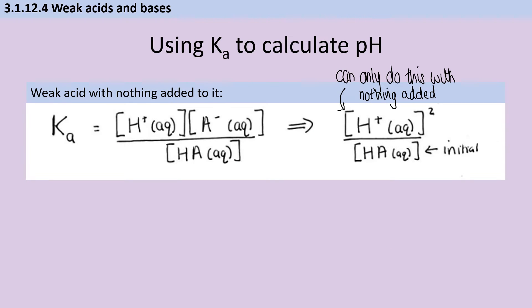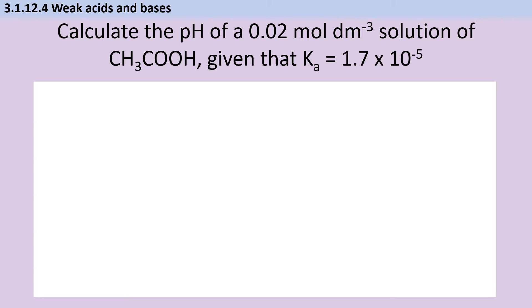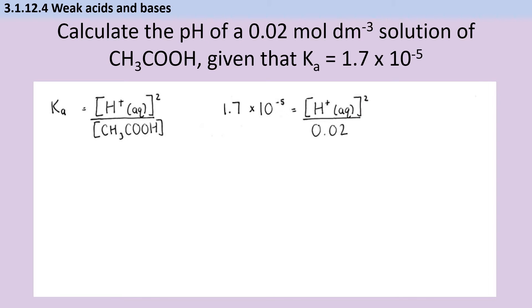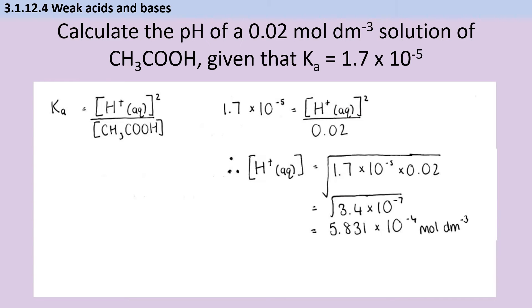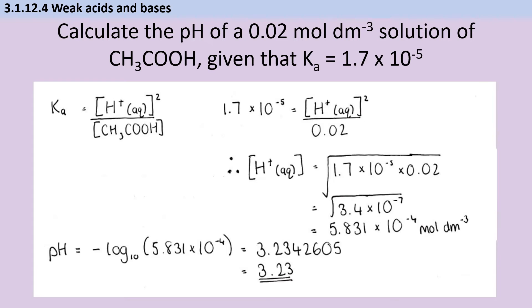Before using Ka to calculate pH, we make two key assumptions. First, for a pure weak acid with no base or salt added, the concentration of hydrogen ions and the anions is the same, so we can simplify the expression and use the concentration of hydrogen ions twice. Second, because the amount of dissociation is so small, the initial concentration of the undissociated acid is essentially constant and we can use the value given in the question. So for a simple question asking for the pH of a weak acid, we substitute in the numbers, rearrange to get the hydrogen ion concentration, and put that into our pH calculation, giving the answer to two decimal places.